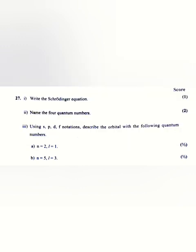Using spdf notations, describe the orbital with the following quantum numbers. a) n equals 2, l equals 1. Answer: 2p. b) n equals 5, l equals 3. Answer: 5f.